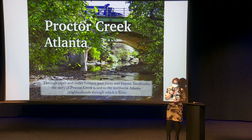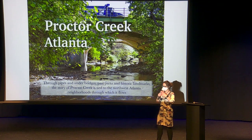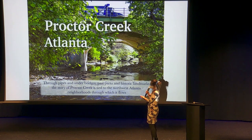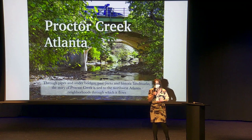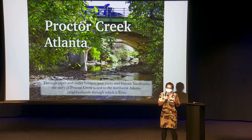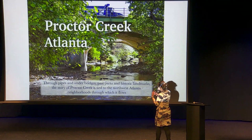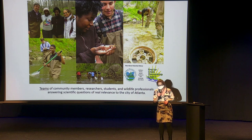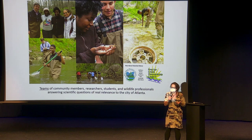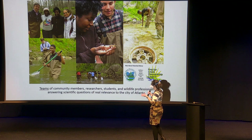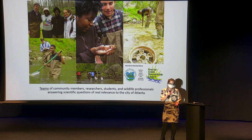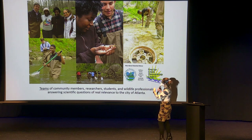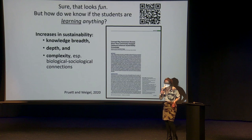One of our sites is Proctor Creek in Atlanta. Proctor Creek is part of a giant watershed where all water flows in a specific way, connecting communities. We look specifically at Proctor Creek to see the history of how water has flowed and how human interactions have shaped the ecology of that space. Teams of community members, researchers, students, and wildlife professionals go out to answer questions about the health of the ecosystem and the people around it.